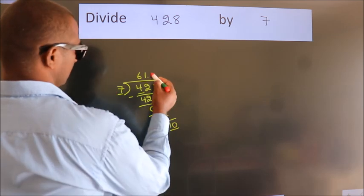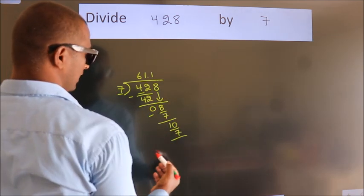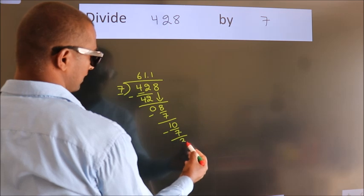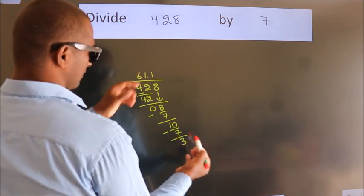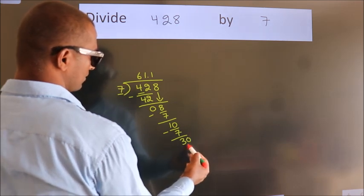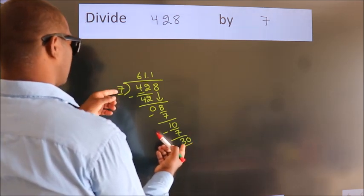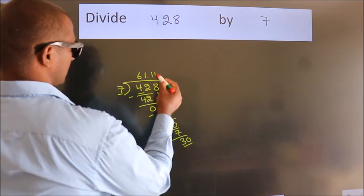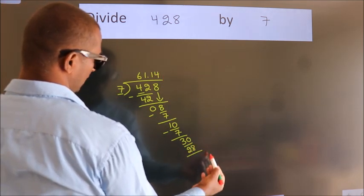Now we subtract and get 3. After this, we already have the decimal, so directly take 0. So 30. A number close to 30 in the 7 table is 7 times 4 equals 28.